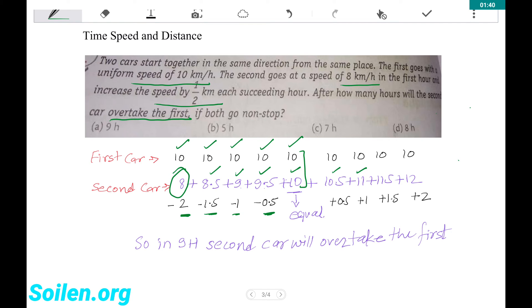To overtake the first car, the second car has to cover this distance in the next hours. So in the 5th hour it will gain 0.5 km, then 1 km, 1.5 km, and 2 km in the following hours.